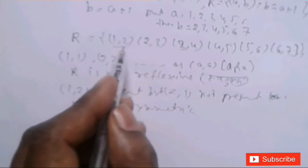For transitivity: (1,2) and (2,3) are present in R. If R were transitive, then (1,3) should also be present — but (1,3) is not present in R.